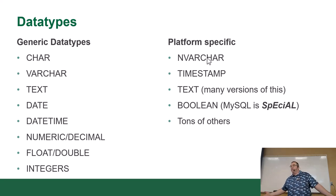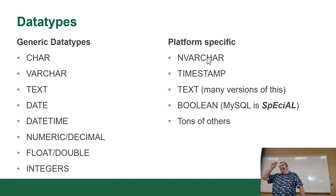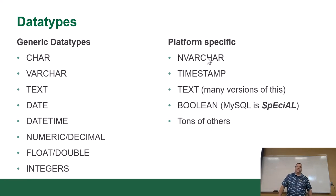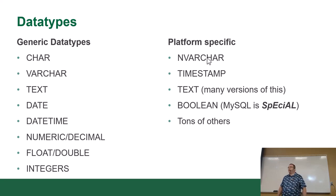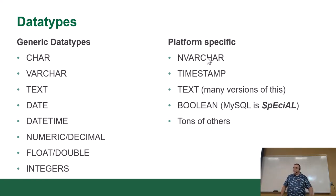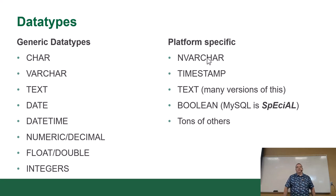Text fields let you put in a lot of text. Some database servers call it something different — Microsoft products call it a memo field, Oracle calls it a CLOB (Character Large Object), Postgres calls it TEXT. The limitation on text fields depends on the database engine. In Postgres, it'll hold basically until you run out of disk space in a single field — it just lets you put in whatever you want.